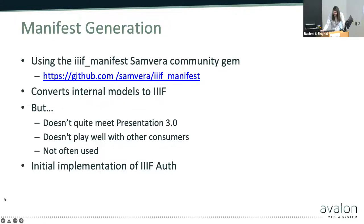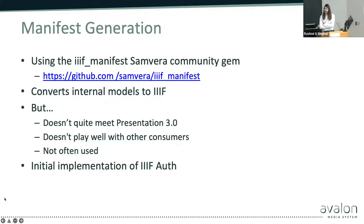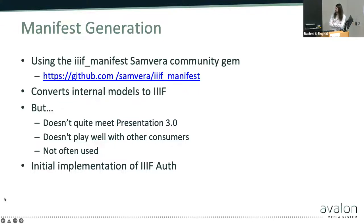Let me talk about manifest generation. We use the IIIF manifest Samvera community gem. Samvera is the community and software stack we're a part of — basically building blocks for repository software. This gem converts our internal models into IIIF, but it's a little long in the tooth and doesn't meet a lot of the Presentation 3 stuff we're looking for as an AV delivery system. It doesn't play well with consumers like Mirador or UV, which is a big focus coming up. We want manifests produced by our application to be easily loaded into those players.